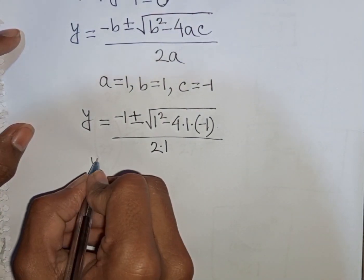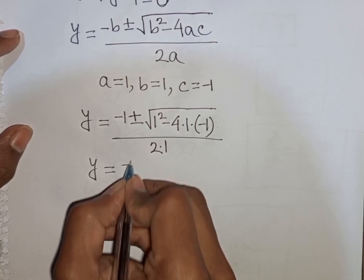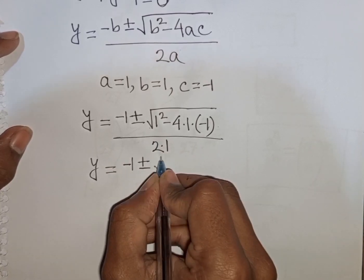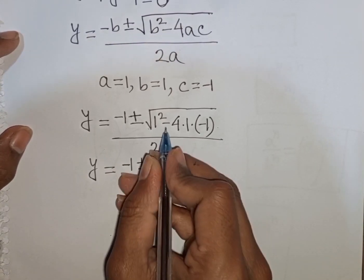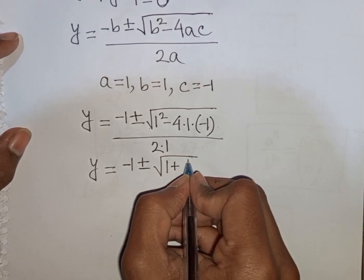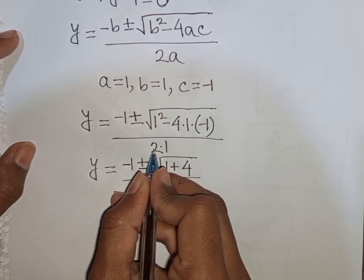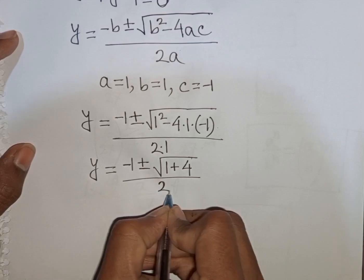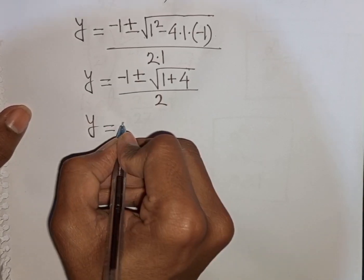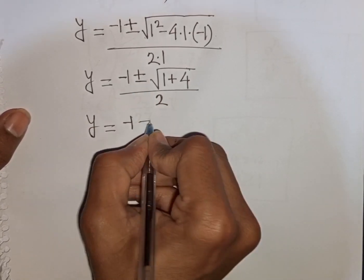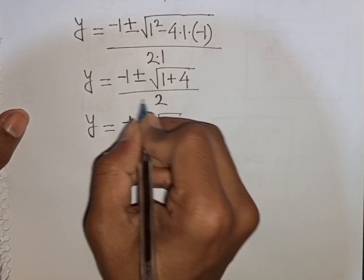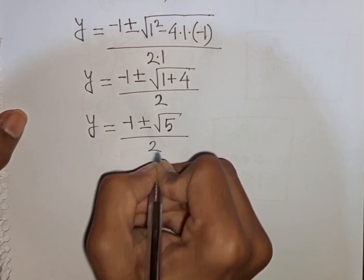Simplifying: y equals negative 1 plus or minus square root of (1 plus 4) divided by 2, which gives y equals negative 1 plus or minus square root of 5 divided by 2.